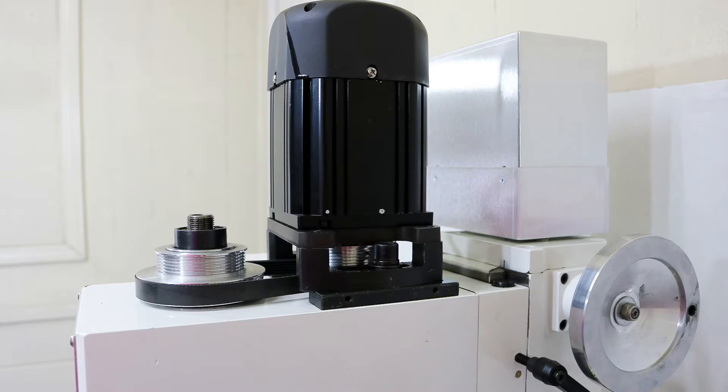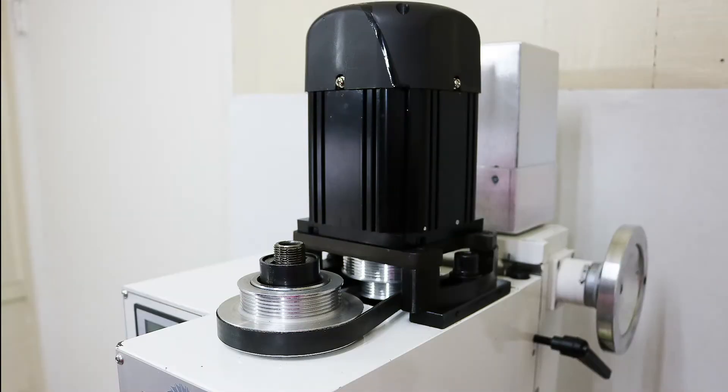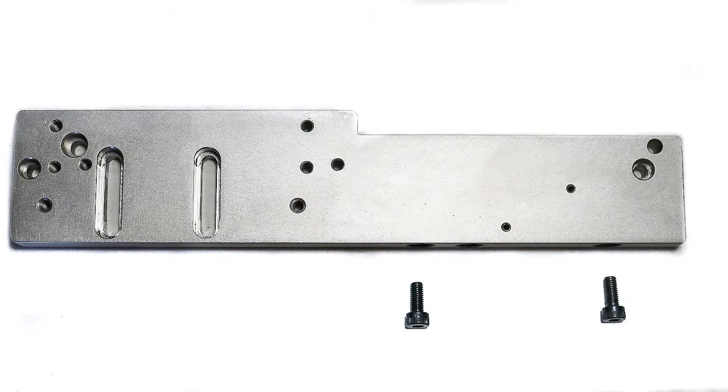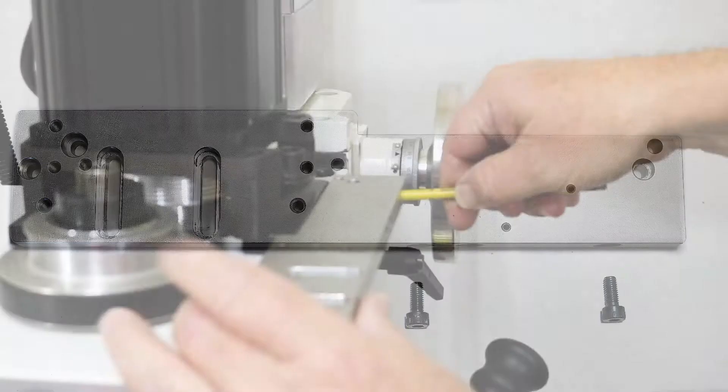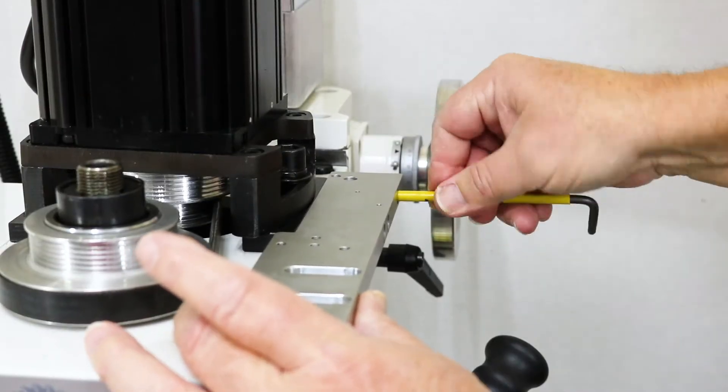The next step is to prepare the mill for installation of the power drawbar. This mill has already been prepared and set up and ready for the installation. The next step in the process is to install the support plate.